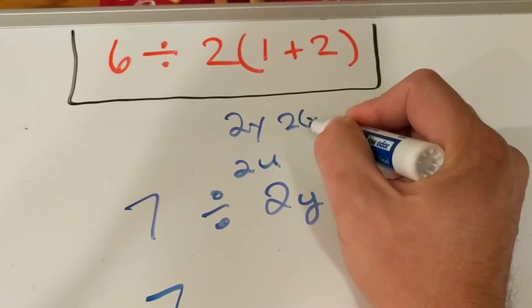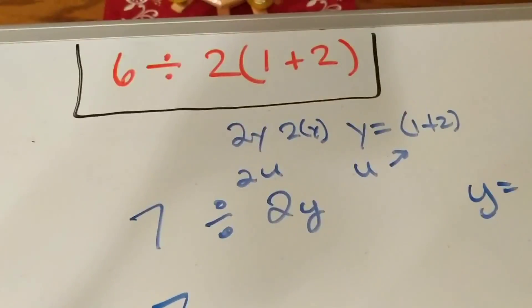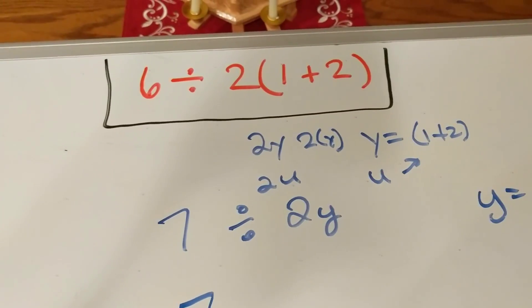Even if you had 2 and y in parentheses, it's the exact same thing. The answer is 1.